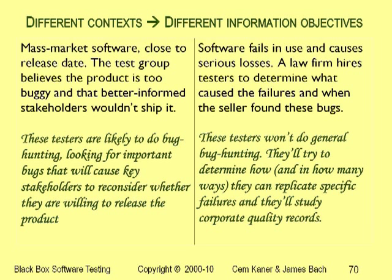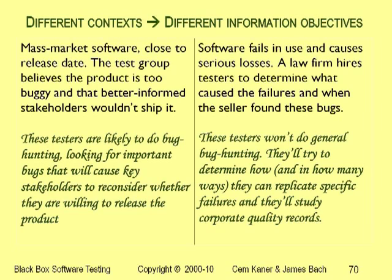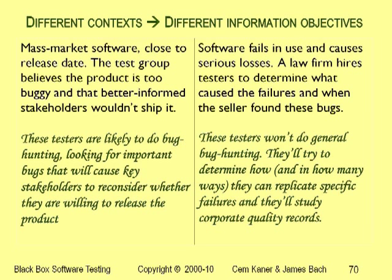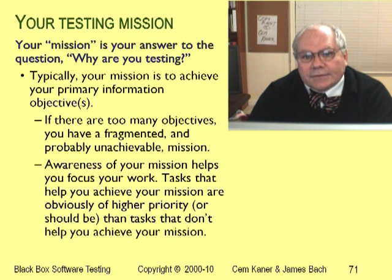Different situations lead to different information objectives. Here's an example contrast. First case: the question is whether the product is ready for sale — testers can influence it by hunting for bugs that demonstrate how serious the problems are. A serious enough bug is called a showstopper. Second case: the software's already been released and failed badly in the field, and now there's a test group working for a lawyer. This group isn't looking for showstoppers — they're looking for information to help the lawyer understand the software's problems and explain them to a judge and jury. On every project, it's useful for the test team to explicitly define its mission.